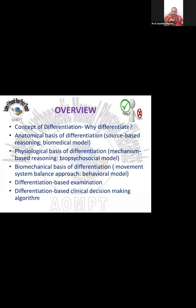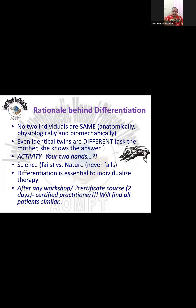We need to differentiate because our hands themselves are not similar — even five fingers of the same hand are not similar. There is an anatomical, physiological, and biomechanical basis for differentiation, and we can utilize that for examination and treatment planning using an algorithm. No two individuals are the same — even identical twins. The mother can tell Ram from Sham, even when others cannot. We don't knowing the difference does not mean everything is similar. Differentiation is essential to individualize the therapy.